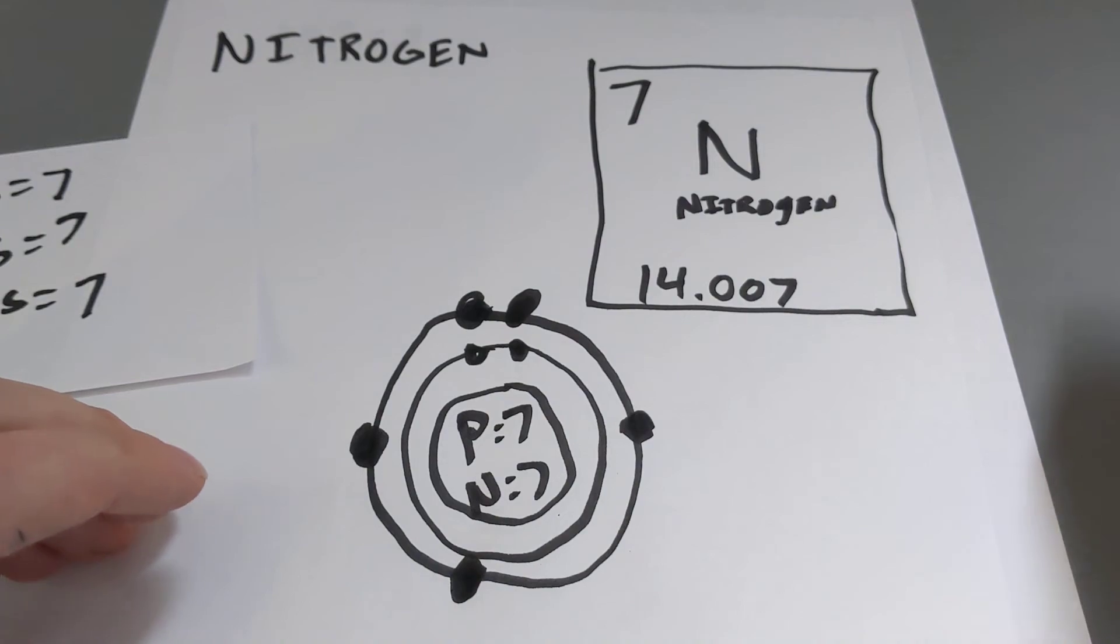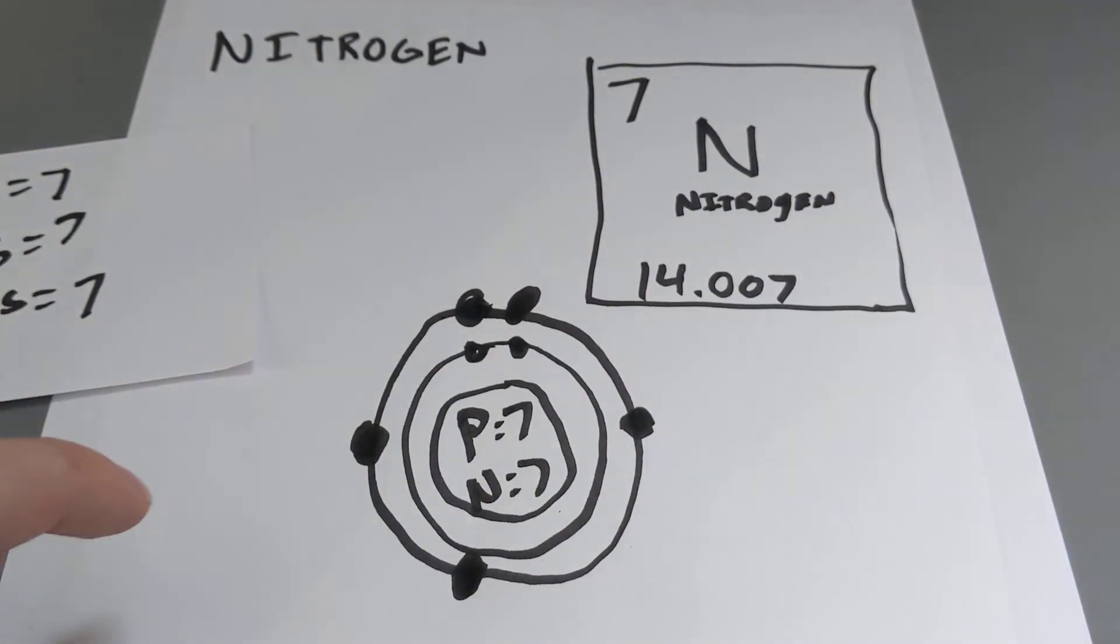So, we have our 7 total electrons, 2 in the inside shell, 5 in the outside shell. And our Bohr model is done. Now, this isn't the only way to do it.